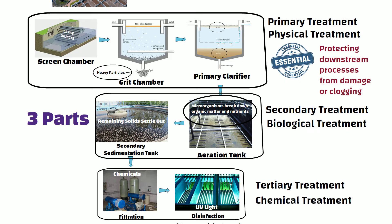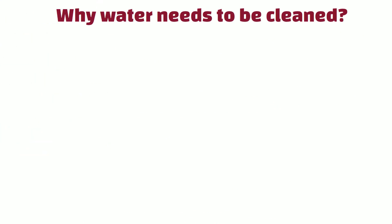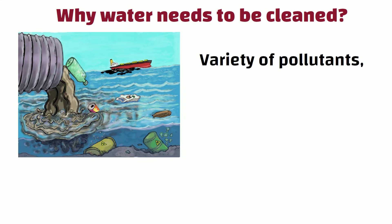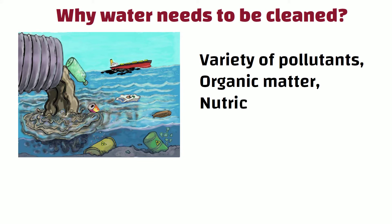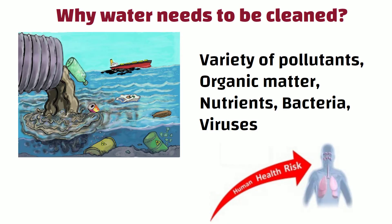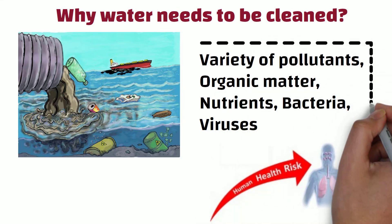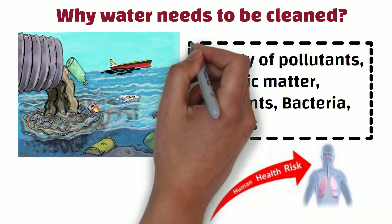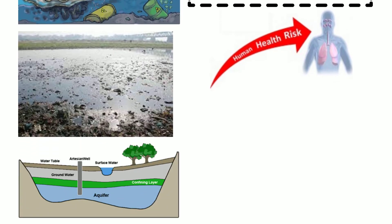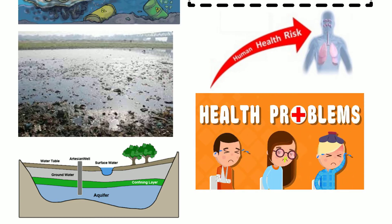Before going into details, a small question needs to be discussed: why does water need to be cleaned, and why can't we just throw that water into the environment? It's because raw sewage contains a variety of pollutants including organic matter, nutrients, bacteria, viruses and other harmful substances that can pose a risk to human health and the environment. If these pollutants are not removed before the water is discharged, they can contaminate rivers, lakes and groundwater sources and cause health problems for people who come in contact with the water.